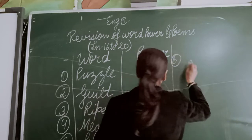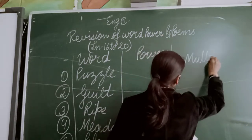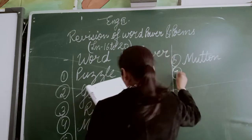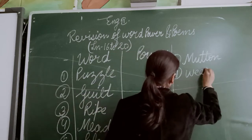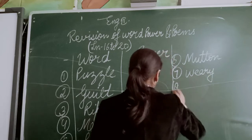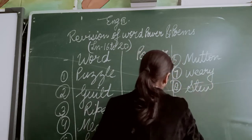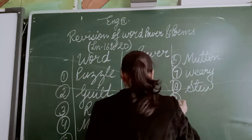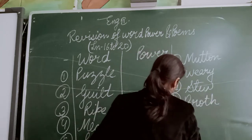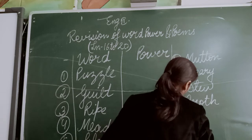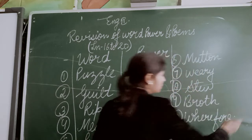Sixth word power is mutton. Seventh is very. Eighth is stew. Ninth is growth. And tenth is wherefore.